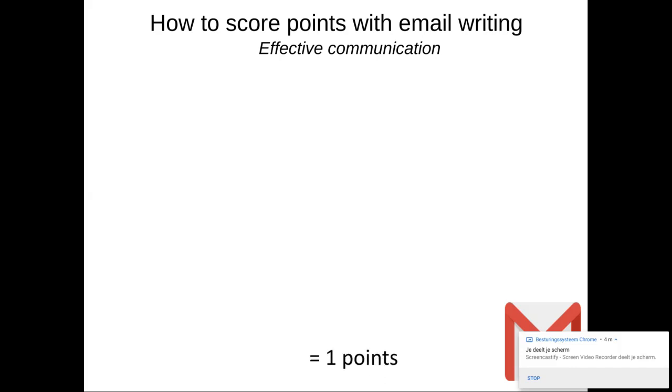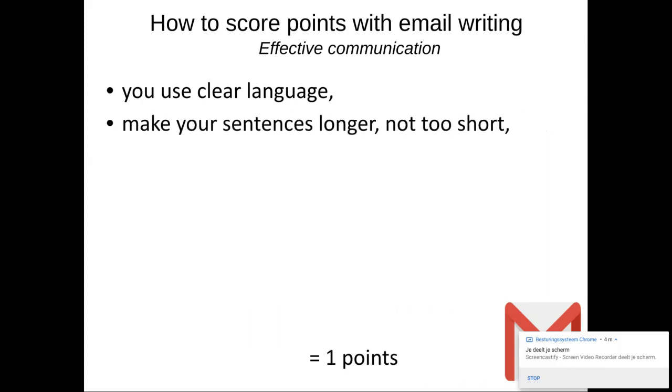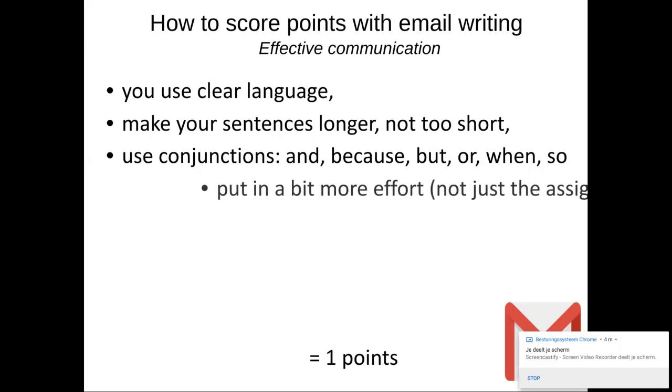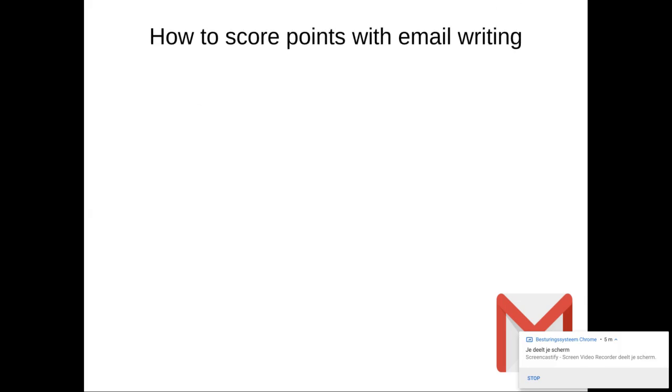And the other point is for you use clear language. So no silly words or stupid words. You make your sentence just a little bit longer, not too short. And you use conjunctions. So for example, you say, I am writing this letter because I have got a question. Or it's very nice that you have chocolate cookies. But I like to have chocolate cookies with dark chocolate. Yeah. So these are conjunctions. Put a little bit more effort in, not just the assignment. Just do a little bit extra. That's always very good to have your extra points. So then you will have two points.